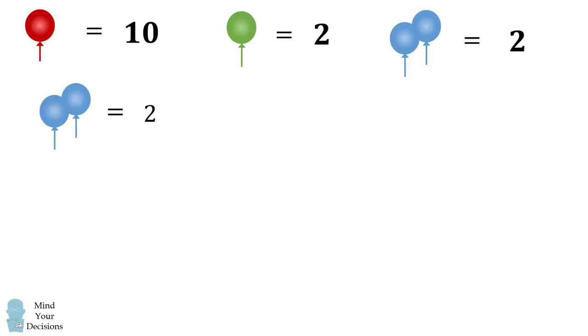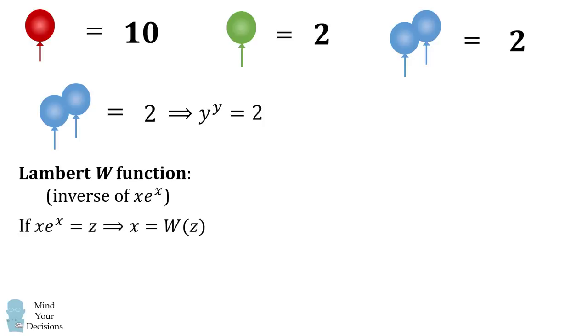If we let a single blue balloon be denoted by the variable Y, this visual puzzle would translate into Y to the power of Y is equal to 2. How can we solve this equation? We'll use the Lambert W function, which is the inverse of the function X times E to the power of X. If X times E to the power of X is equal to Z, we then have X is equal to W of Z. We don't know its explicit form, but if we have something like X times E to the power of X, we can take its inverse to solve for X.